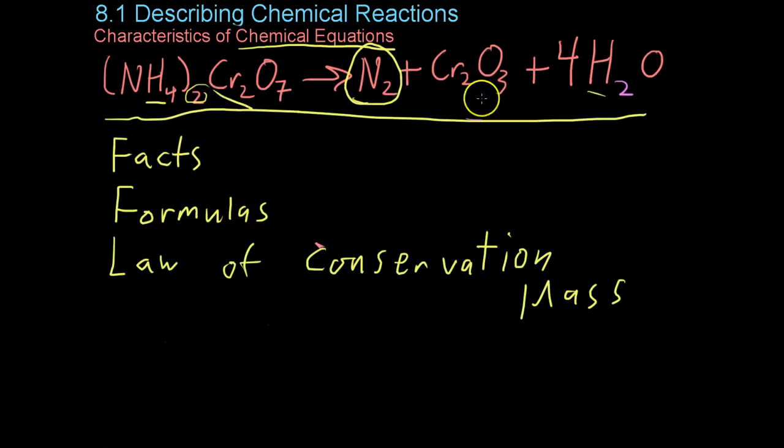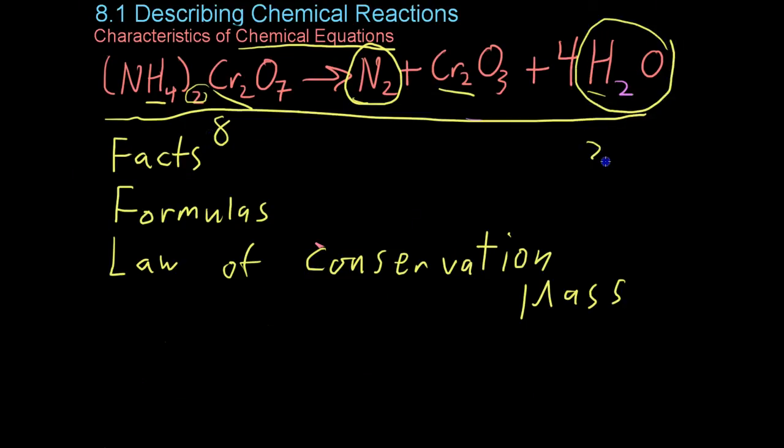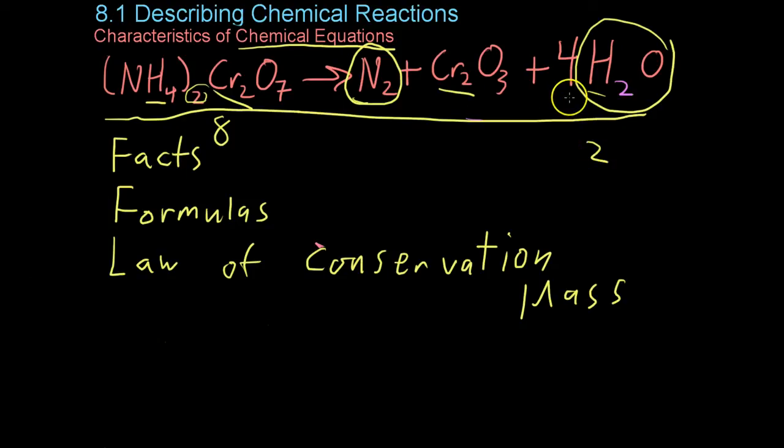However, once you get to the hydrogen, once you distribute this, you get eight hydrogen over here, and if you were to just say that it reacts to form water, you'd only get two hydrogen over here. So, the way you compensate for this, that is, obey the law of conservation of mass, is by using what are known as coefficients.